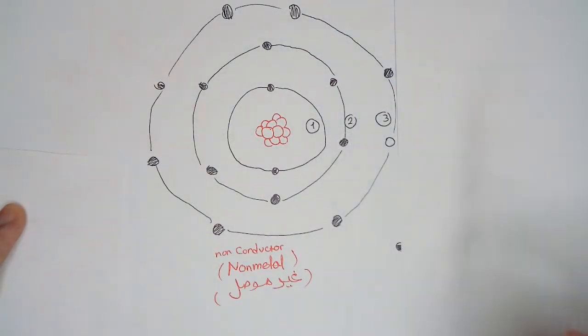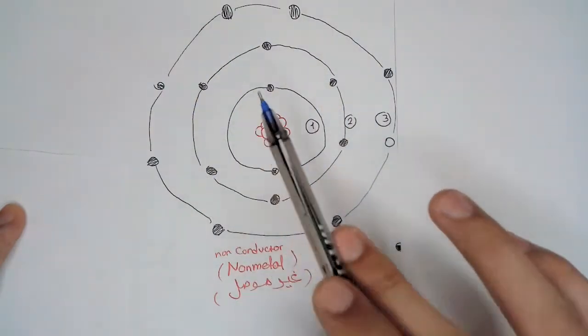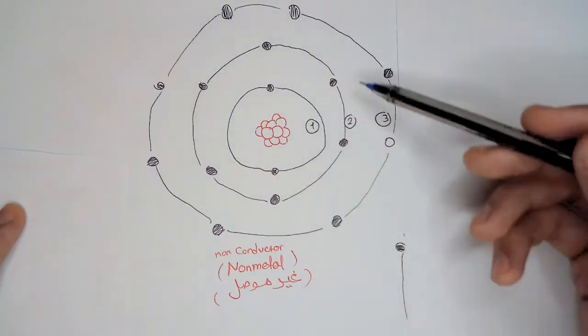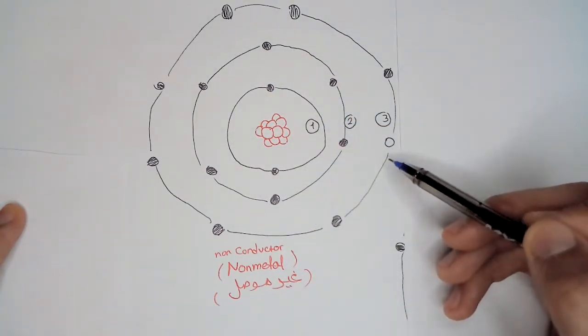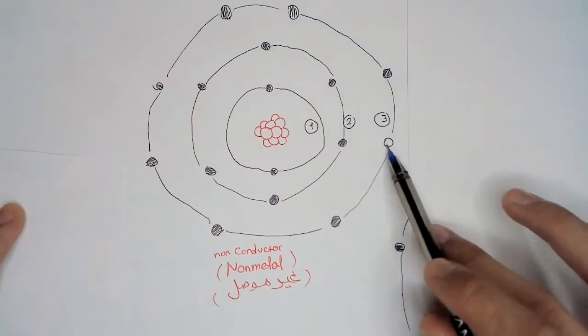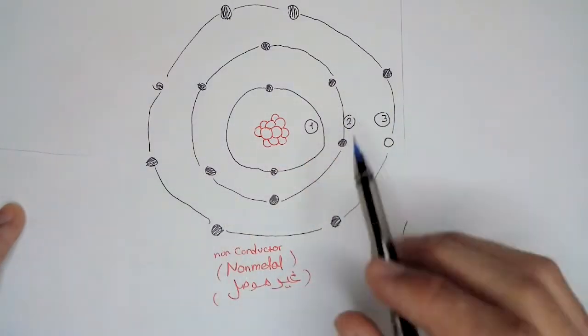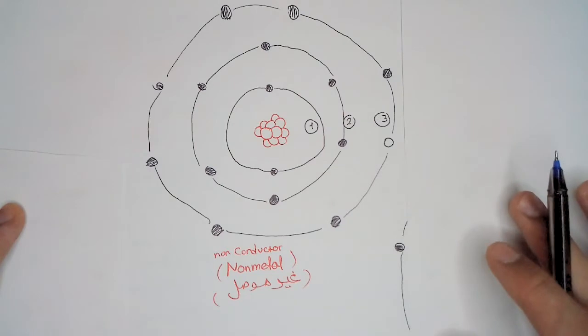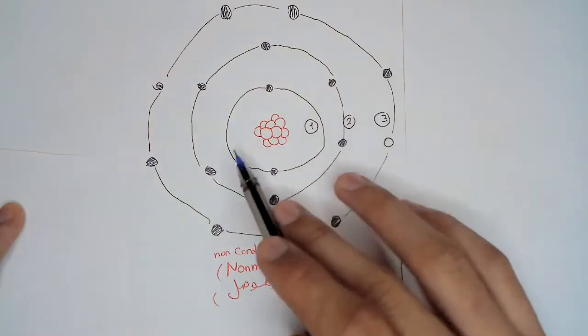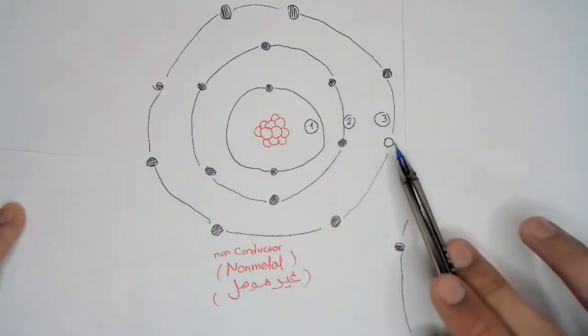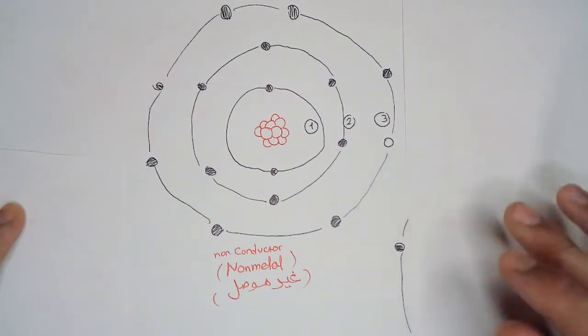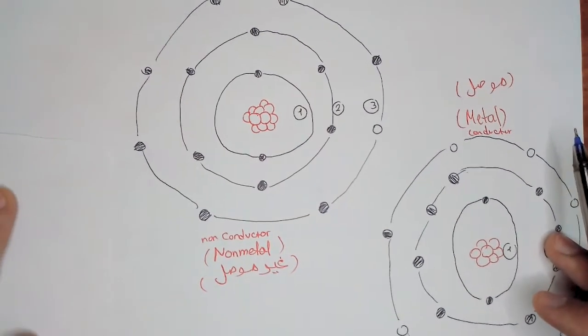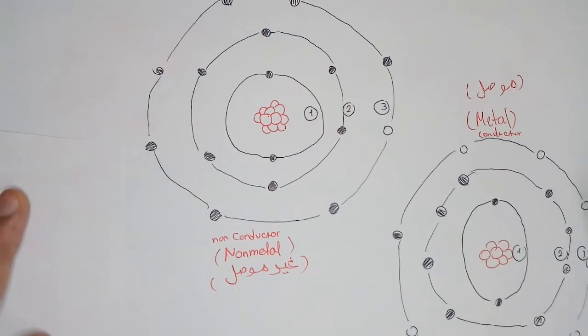Each orbit takes a certain number of electrons. The first takes only 2, the second takes 8, and the third takes 18 but it's preferable to take only 8. What differentiates an atom's element from another is the atom size, the number of electrons, but what decides how this atom reacts is mainly the number of electrons in the last orbit or floor. This is the shape of a non-metal atom and in the last orbit its number of electrons is either 5, 6, or 7. Keep in mind that any atom needs to have only 8 electrons in its last outer shell. That's why non-metal atoms tend to gain electrons to fill its orbit with 8 electrons.